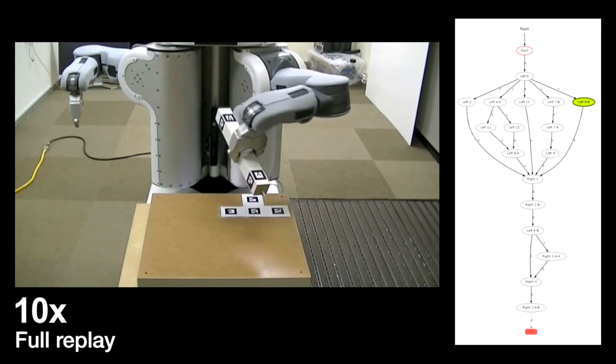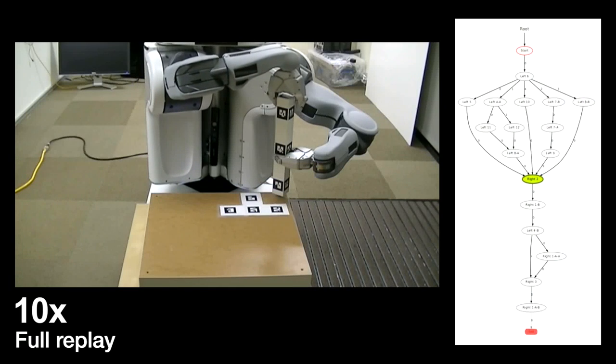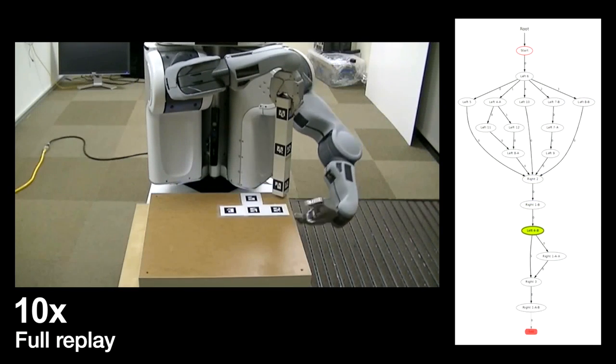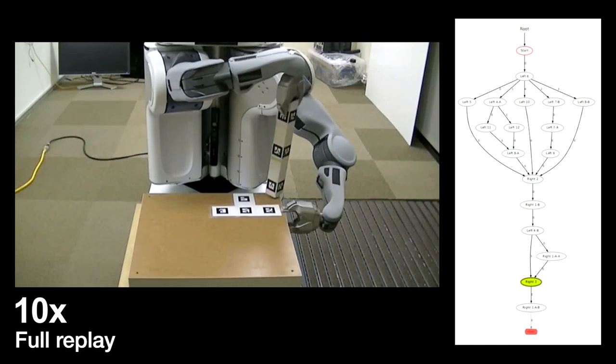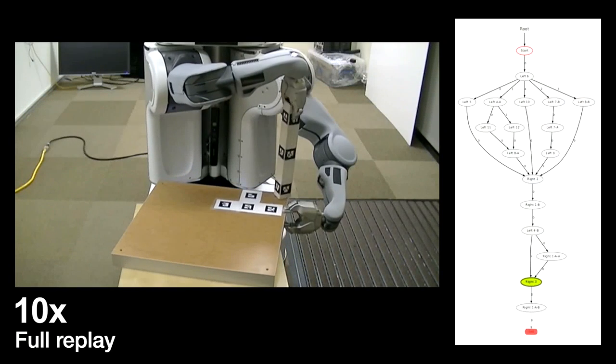Finally, we show a full execution of the task from start to finish, in which no contingencies are encountered, showing that the interactive corrections have not interfered with the policy in the nominal case. It can be seen that the robot, yet again, takes a different path through the finite state machine, avoiding the recovery behaviors.